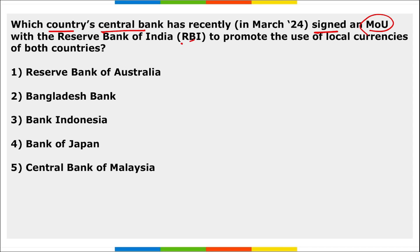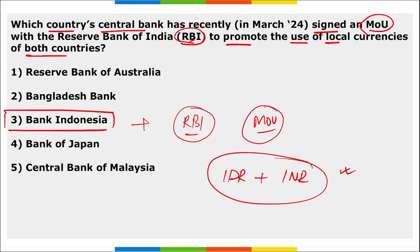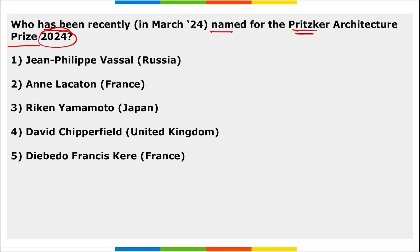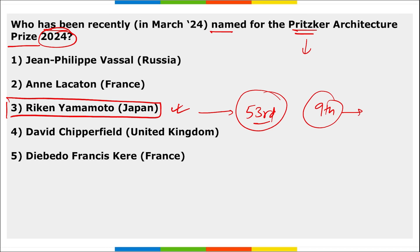The Bank of Indonesia and the Reserve Bank of India signed an MoU to promote the use of local currencies of both countries — Indonesian Rupiah (IDR) and Indian Rupee (INR) — to enhance bilateral trade. Ryuken Yamamoto of Japan was named for the Pritzker Architecture Prize 2024 — the highest honor in the field of architecture. He became the 53rd laureate to be honored with the Pritzker Architecture Prize and the ninth Japanese architect to win this prize. The prize includes a cash prize of 100,000 US dollars and a bronze medallion.